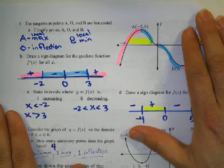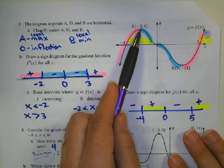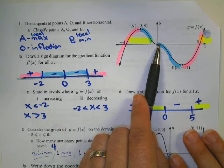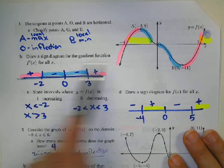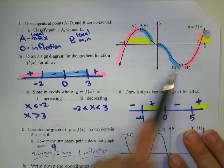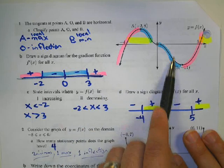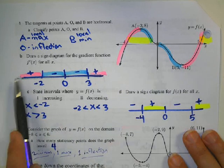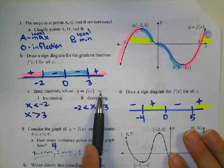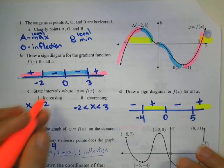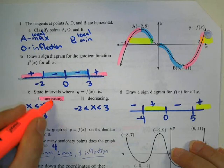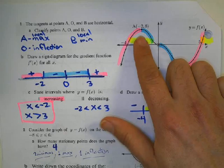Looking at the next example: point A is the top of the mountain — a local max. Point B is at the bottom of the valley — a local min. At O, we have an inflection point. The sign diagram shows the stationary points are at negative 2, 0, and 3. It's increasing, then decreasing, then increasing. The function is increasing when x is less than negative 2, and also when x is greater than 3. It's decreasing when x is between negative 2 and 3.